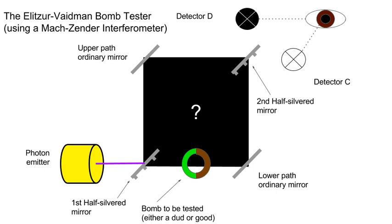If the bomb is live, there is a 50-50 chance that the photon took the upper path. If it factually did so, then it counter-factually took the lower path. That counter-factual event destroyed that photon and left only the photon on the upper path to arrive at the second half-silvered mirror, at which point it will again have a 50-50 chance of passing through or being reflected, and subsequently be detected at either of the two detectors with the same probability. This is what makes it possible for the experiment to verify the bomb is live without actually blowing it up.